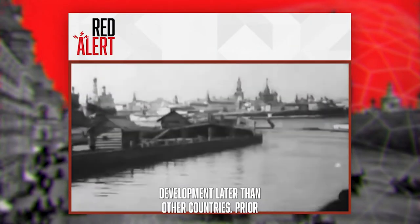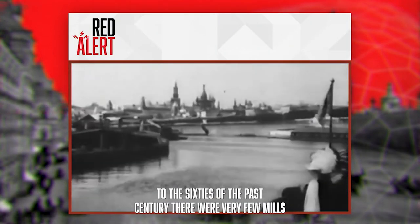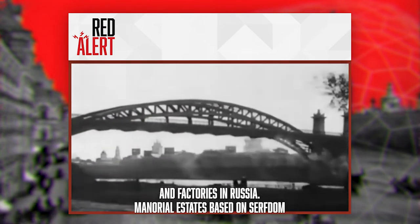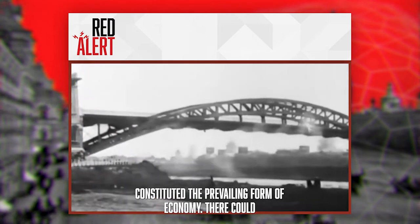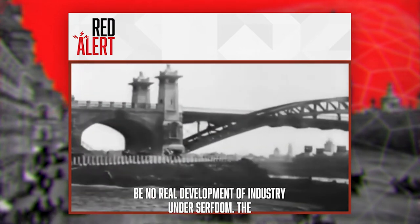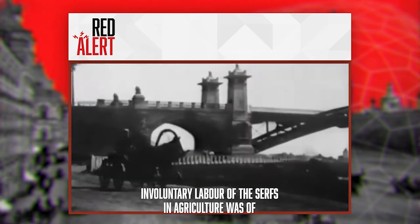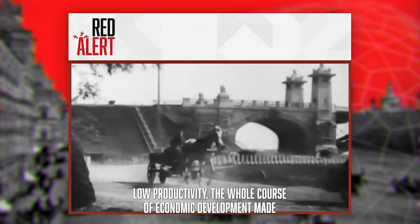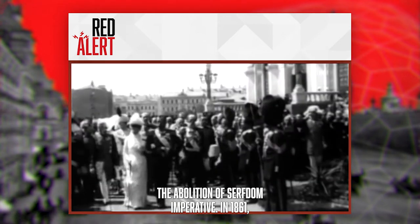Tsarist Russia entered the path of capitalist development later than other countries. Prior to the 1860s, there were very few mills and factories in Russia. Manorial estates based on serfdom constituted the prevailing form of economy. There could be no real development of industry under serfdom. The involuntary labour of the serfs in agriculture was of low productivity. The whole course of economic development made the abolition of serfdom imperative.